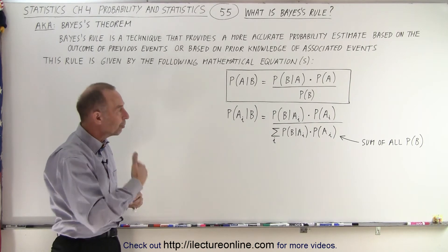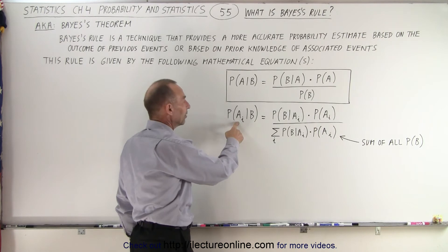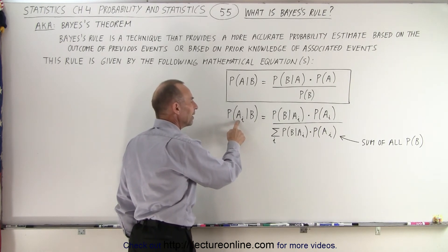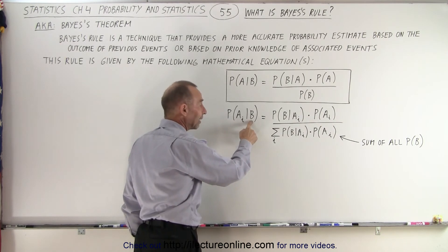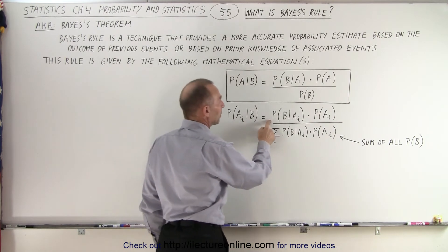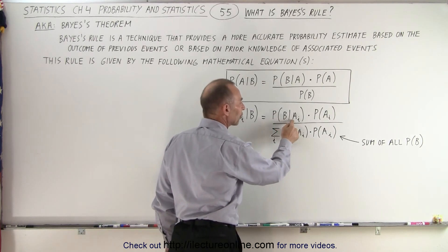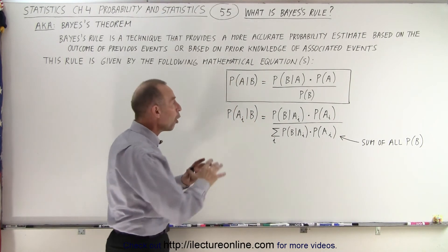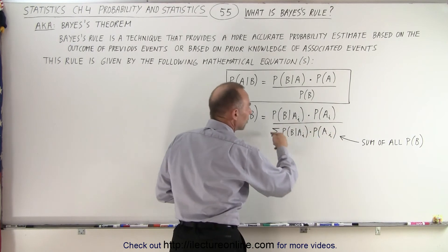Sometimes there's multiple events that we have to look at, and so we'll write it as this: the probability that one of those events belonging to event A will occur, given that B has occurred, is equal to the probability that B will occur given that that particular event A has occurred, times the probability of that particular event, divided by all the possibilities of getting the probability of B, which can be written as this.